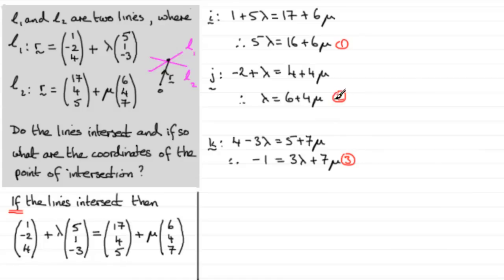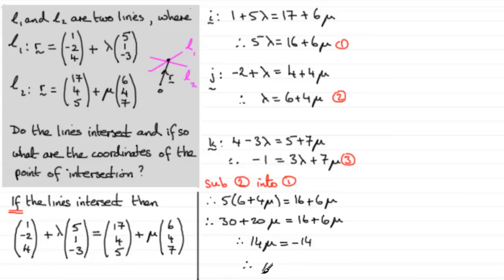So, I'm going to substitute equation 2 for lambda in terms of mu here into equation 1. And then I'll try and work out what mu is. So, let's say we sub equation 2 into equation 1. What's that going to give me? Well, it's going to be 5 times lambda, 5 times 6 plus 4 mu. So, we therefore have 5 multiplied by 6 plus 4 mu equals 16 plus 6 mu. Expanding the bracket, I therefore have 30 plus 20 mu equals 16 plus 6 mu. And if I take 6 mu from both sides and 30 from both sides, then I end up with 20 mu take away 6 mu, which is 14 mu, equals 16 take away 30, which is minus 14. And dividing both sides by 14 gives me mu equals minus 1.